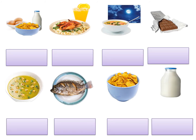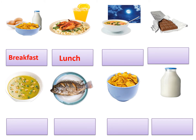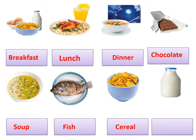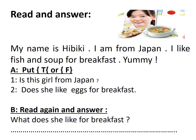Look at the pictures and think of a word that can be written under each one. Picture one: breakfast. Picture two: lunch. Picture three: dinner. Picture four: chocolate. Picture five: soup. Picture six: fish. Picture seven: cereal. The last picture: milk. Very good — in this way we remember well the words we had learned before.